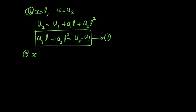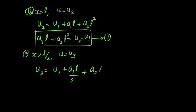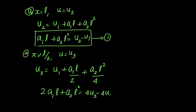The third boundary condition is: at x = L/2, u = u₃. Applying this to the trial solution gives u₃ = u₁ + a₁(L/2) + a₂(L/2)². After taking the LCM and rearranging, this becomes: 2a₁L + a₂L² = 4u₃ − 4u₁. We call this Equation 2.